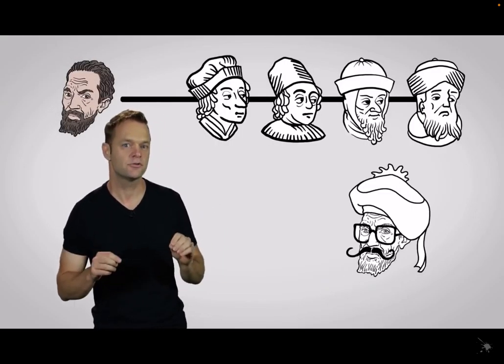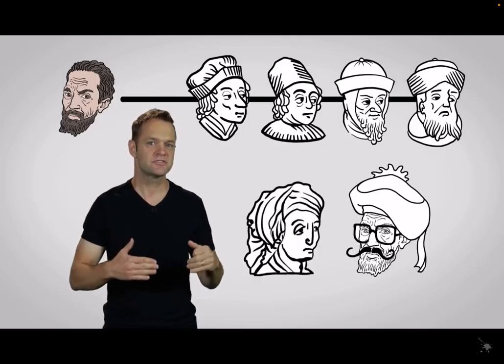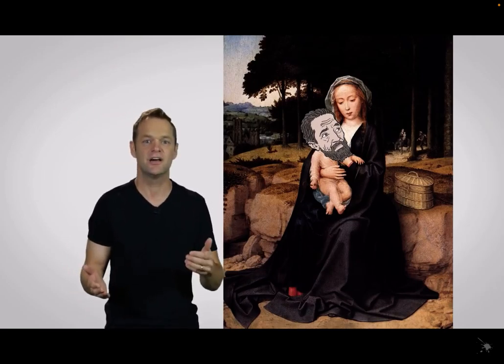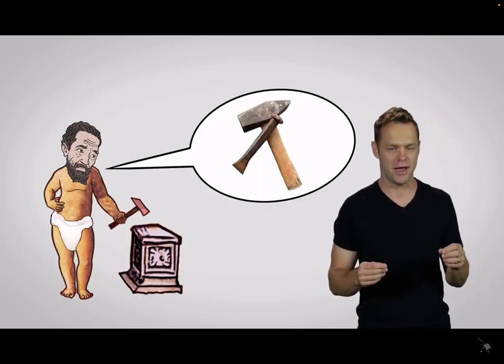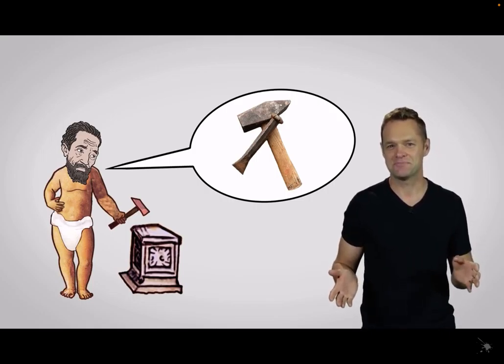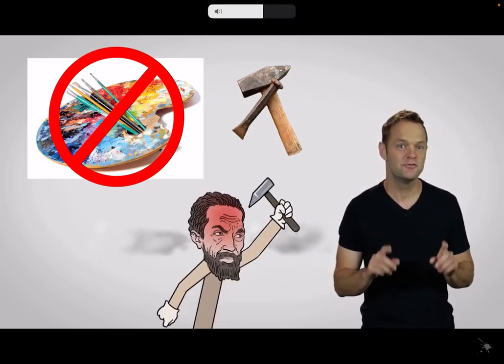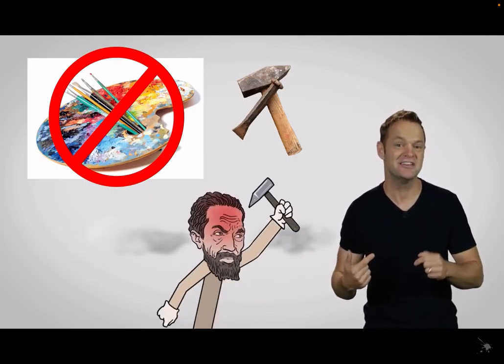Michelangelo had four brothers, and his father was a magistrate. When Michelangelo was an infant, his mother became quite sick. He ended up having a wet nurse, living with a family of stonecutters. Interestingly, Michelangelo said it was because of this stonecutter wet nurse that he 'drank in the hammer and chisel.' Did you know Michelangelo didn't want to be known as a painter? He would probably be insulted if you first referred to him as a painter and not a sculptor.